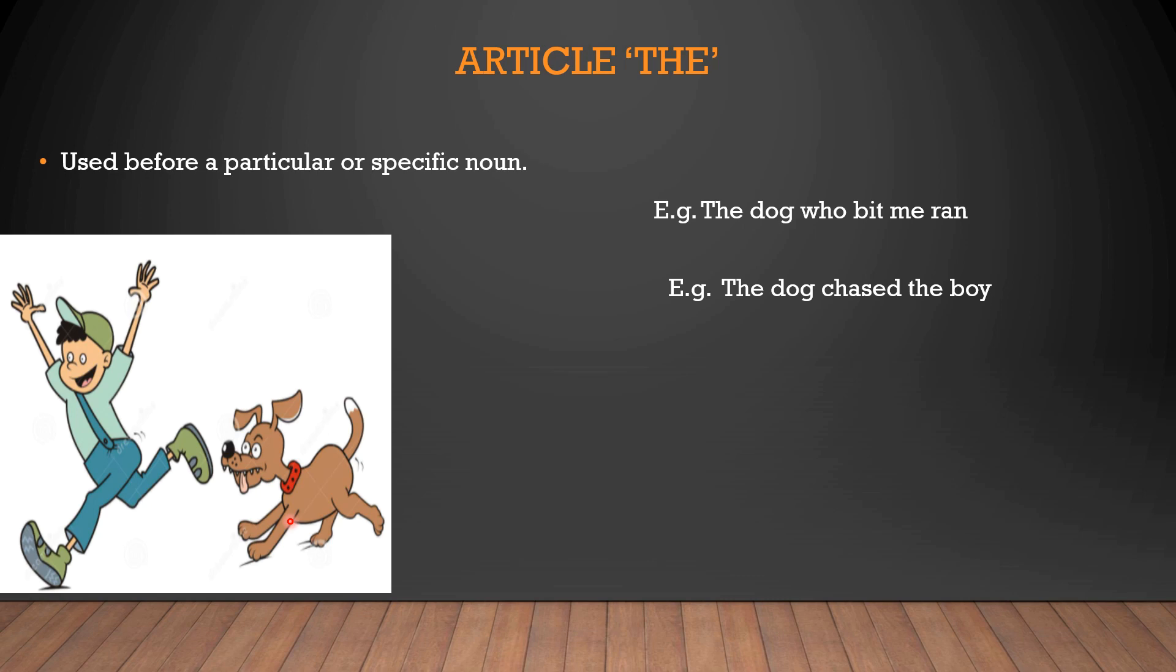So this the dog, it specified the particular dog which bit me last week or yesterday. Then the dog chased the boy. So here the is used twice in order to specify that the dog, the particular dog, and the particular boy. So in order to mention something specific, the article the is being used.